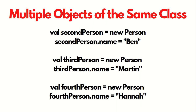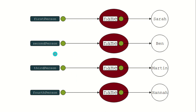How we can make use of multiple objects of the same class? Classes provide reusable code, which means we can create multiple objects using the same class blueprint. Like we already have firstPerson, we can create secondPerson, thirdPerson, and fourthPerson. In this diagram, you can see firstPerson, secondPerson, thirdPerson, and fourthPerson, with name values pointing to Sarah, Ben, Martin, and Hannah respectively. Even though there are multiple name variables, they are all referenced by different objects, so modifying one will not modify the others. That is why the fields are known as instance variables — each object has its own set of those variables.